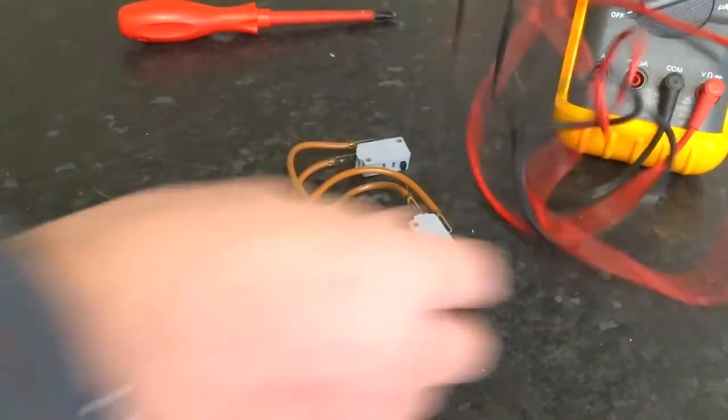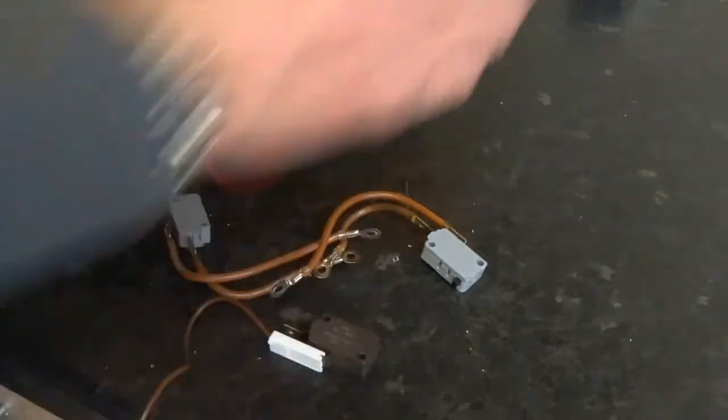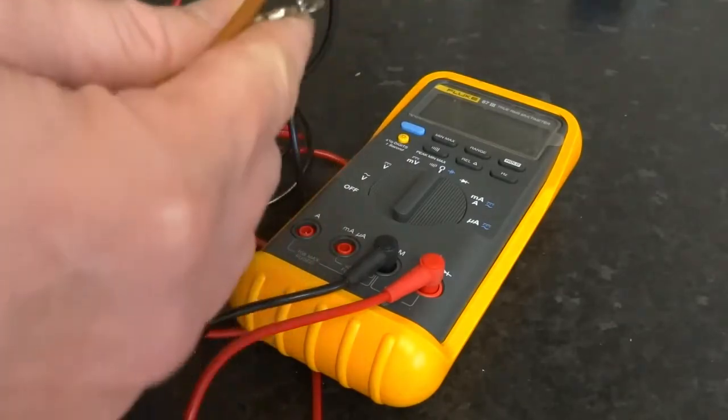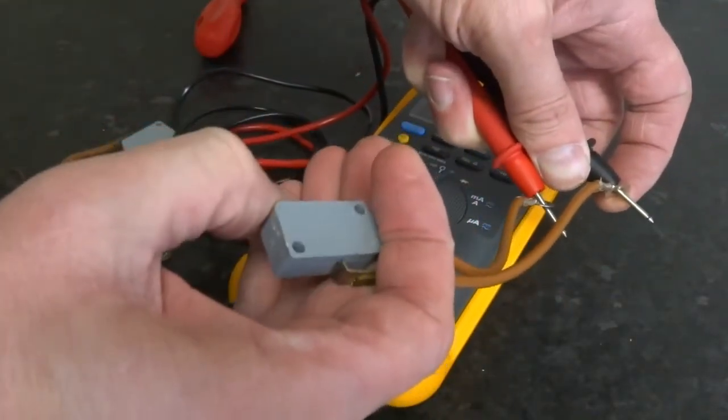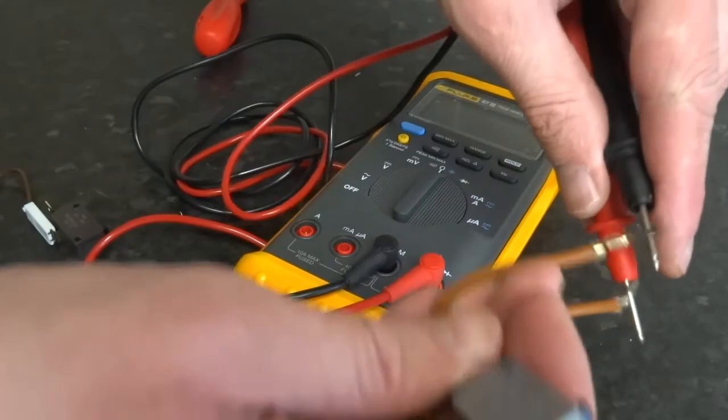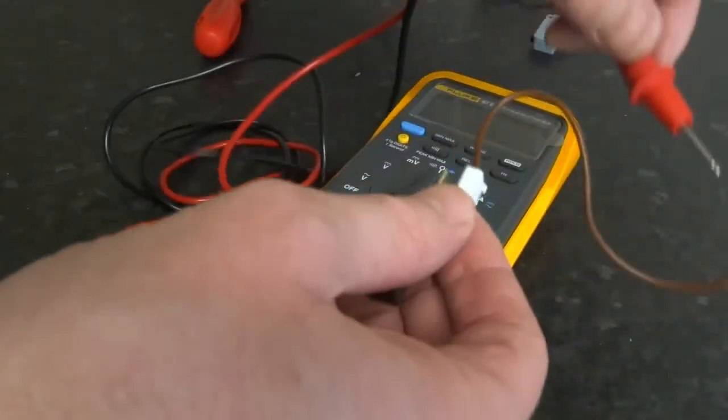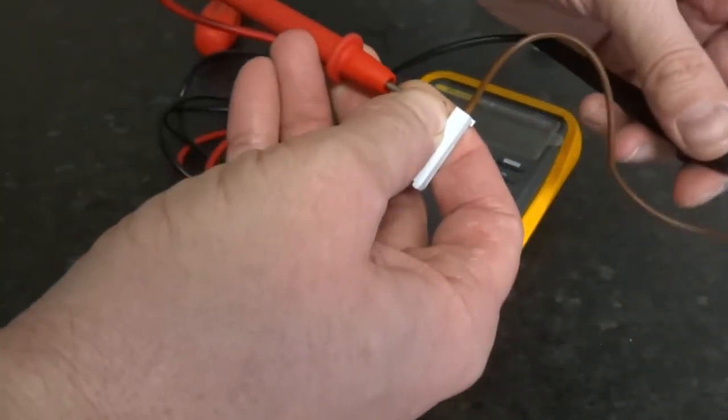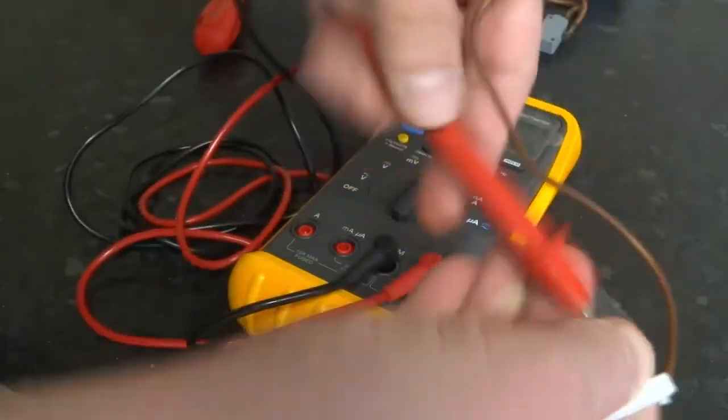And we'll test them. Put it on to ohms, continuity buzzer, so you don't have to look at the screen. Obviously connect your two wires to each switch, then push the button. Fine. These carry a lot of amperes, that's why the wires are thick. Fine. This one's going to be a bit harder. Fine. So it's another 10 or 15 quid on eBay.